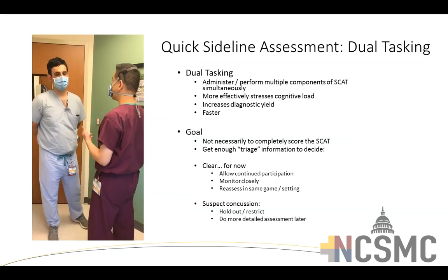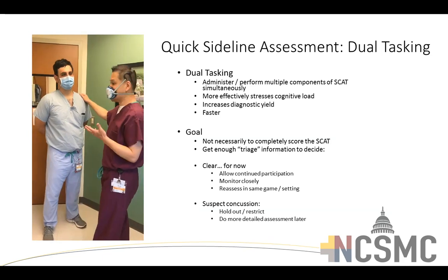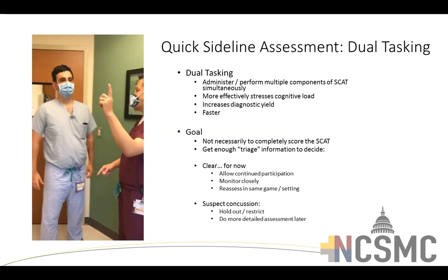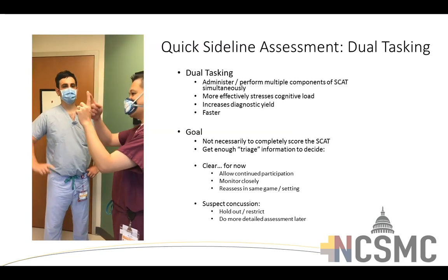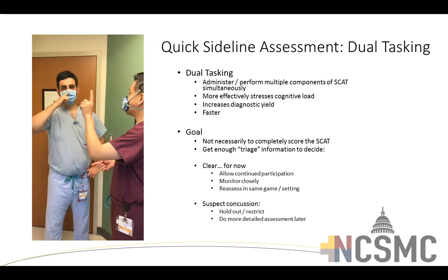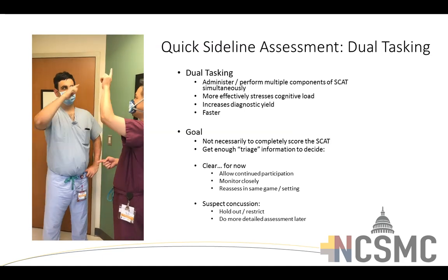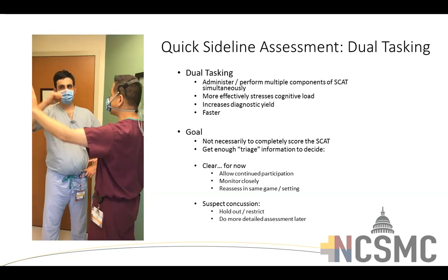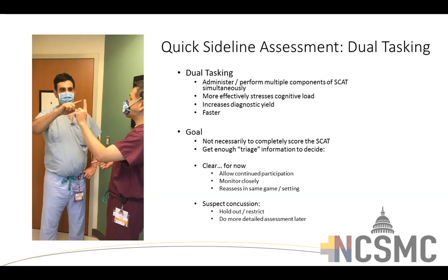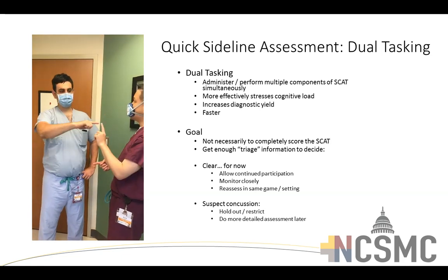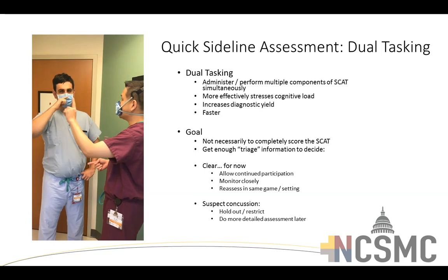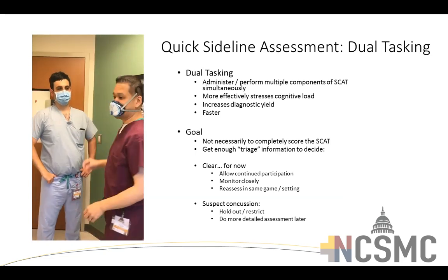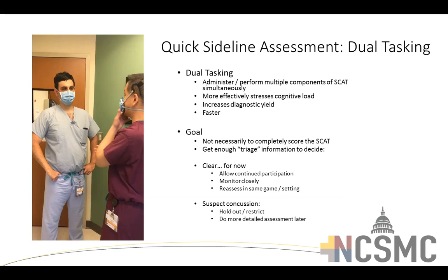Continuing the dual-task demo: 'Hold your head still and look at my finger. Touch my finger and touch your nose, back and forth.' While performing the finger-to-nose test for upper extremity coordination, simultaneously observe the athlete's eyes — because as they track your moving finger, you're essentially doing smooth pursuits at the same time. You can watch that eye tracking is smooth with no nystagmus or staccato movement — dual tasking accomplished.